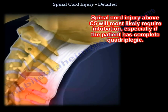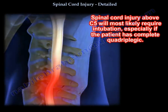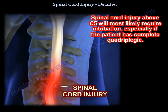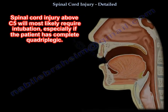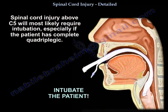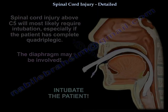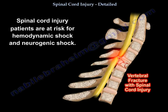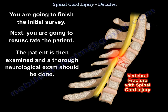Spinal cord injury above C5 most likely will require intubation, especially if the patient has complete quadriplegia. Spinal cord injury patients are at risk for hemodynamic and neurogenic shock. You finish the initial survey and resuscitate the patient. Then the patient is examined and a thorough neurological exam should be done.